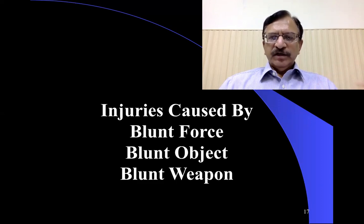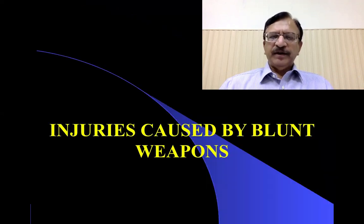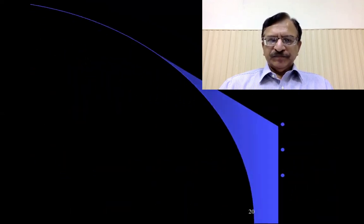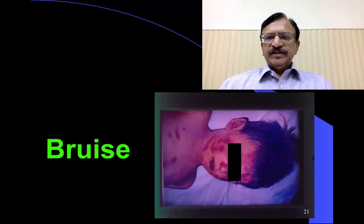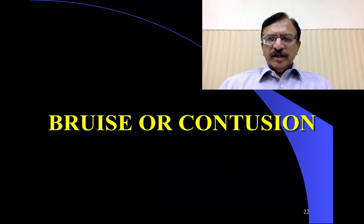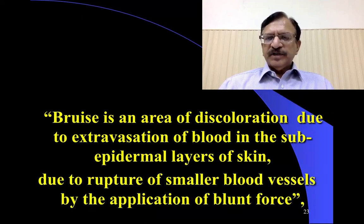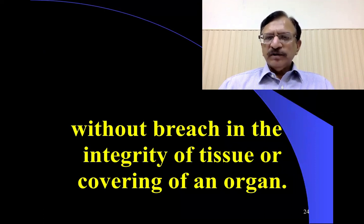This is an overview of the classification. Now we discuss injuries caused by blunt forces or blunt weapons: bruise, abrasions, and lacerations. Bruise or contusion is basically an area of discoloration due to extravasation of blood in the sub-epidermal layers of the skin, due to rupture of small blood vessels by the application of blunt force, and without breach in the integrity of the tissue or covering of an organ.